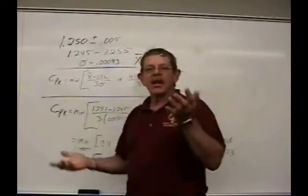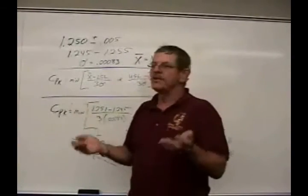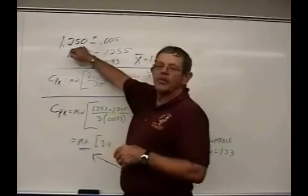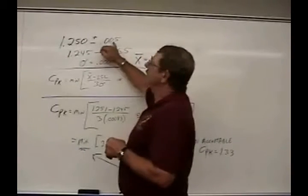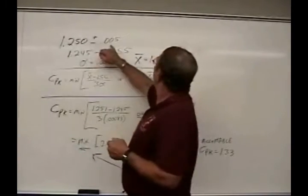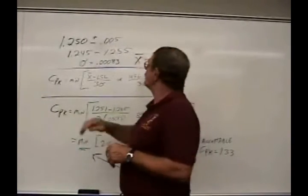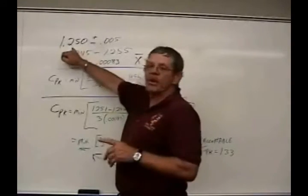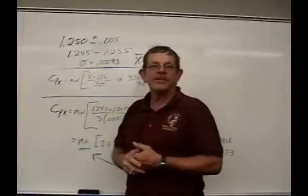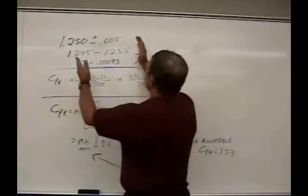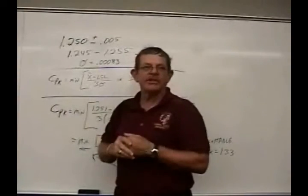By the way, tolerances and spec limits are interchangeable. For instance, a product that the customer orders at 1.250 has a tolerance or spec limit of .005. That means this product could be anywhere from 1.245 to 1.255, and as long as that product was in that range, it's an acceptable product to the customer.